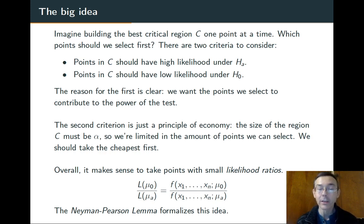That is, the likelihood function under the null hypothesis divided by the likelihood function under the alternative hypothesis should be small. Again, remember that a likelihood function is just a joint PDF that is being viewed as a function of some parameter. So the idea that we want this ratio to be small is formalized in the Neyman-Pearson lemma.